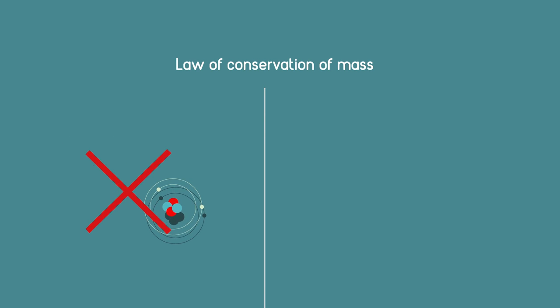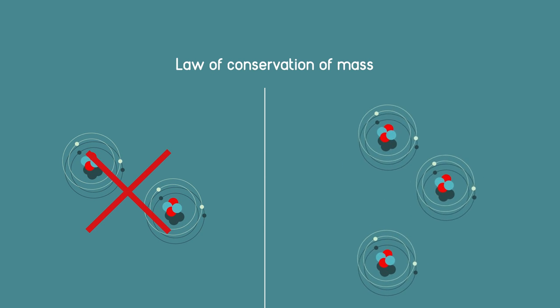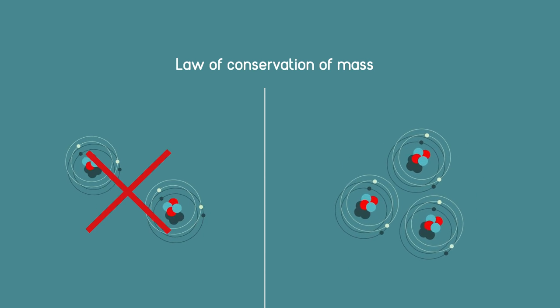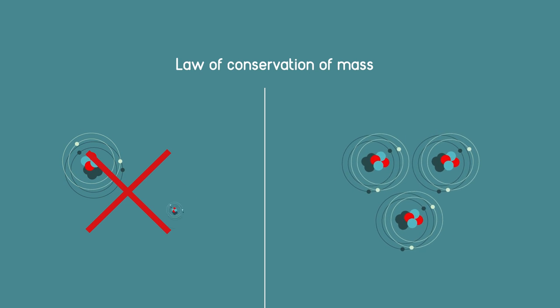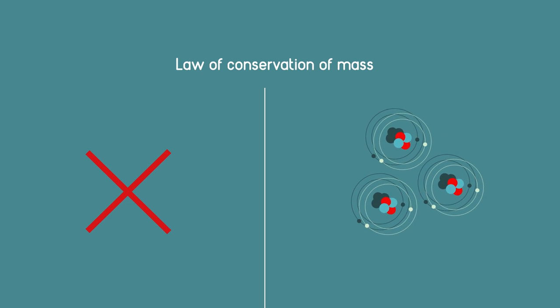According to the law of conservation of mass, no atoms are created or destroyed in a reaction. The atoms from the reactants are simply rearranged to form products. So why not maximize reactions so that no atoms are wasted as side products?